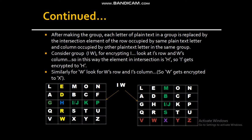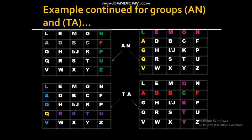Now let's continue with the encryption. Our first group is IW. To encrypt I, look for I's row and W's column in the matrix. The element at the intersection is H, so I is encrypted to H. To encrypt W, look for W's row and I's column — at the intersection one can find X, so W gets encrypted to X. The second group is AN. For A, look at A's row and N's column — so A gets encrypted to F. For N, look at N's row and A's column — so N gets encrypted to L.